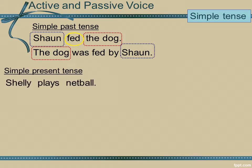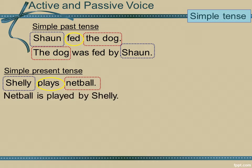Simple present tense: Shelly plays netball. Shelly is my subject, plays the verb and netball the object. Again, I need only switch the subject and the object around. Netball is played by Shelly — Shelly now standing at the back while netball is at the head of the sentence.